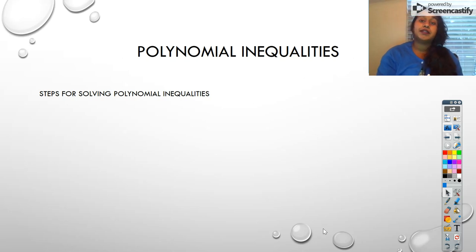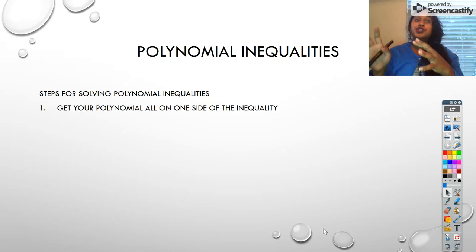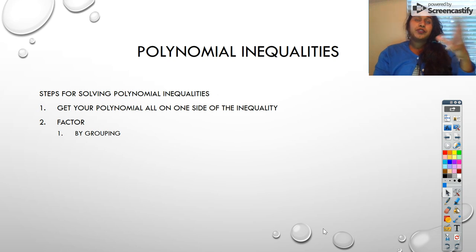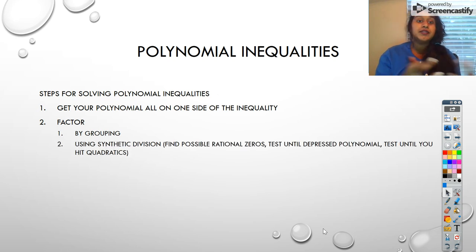We have a few steps for solving that polynomial inequality. The very first thing you want to do is get everything to one side of the inequality. You want to get your inequalities to be greater than or equal, greater than, or less than zero. Then we're going to factor. Nine times out of 10, your polynomials aren't going to be a simple quadratic. So if that's the case, you might have to factor by grouping, or you might have to use synthetic division. Remember, we did this last class where you found possible rational zeros.